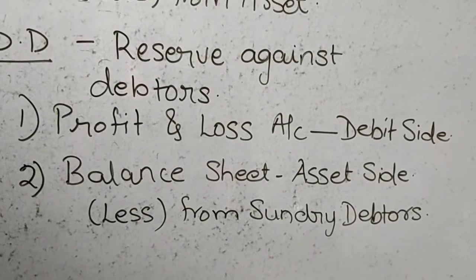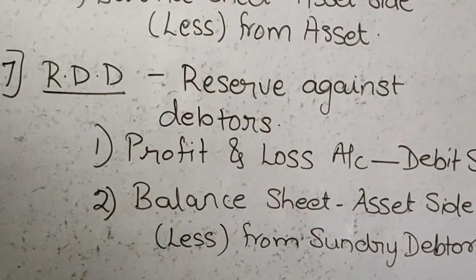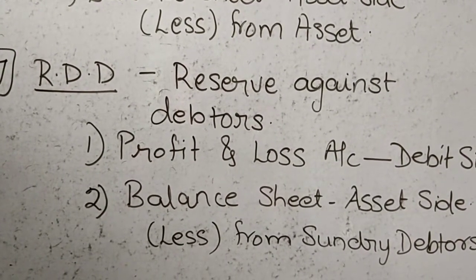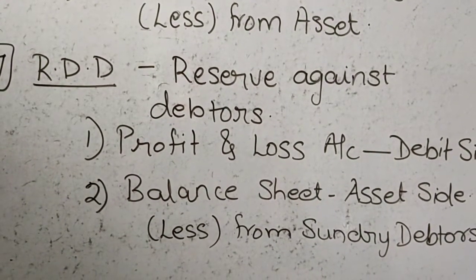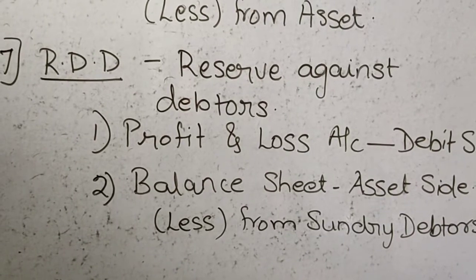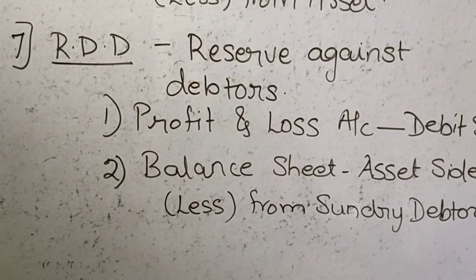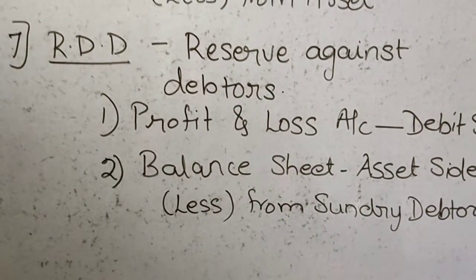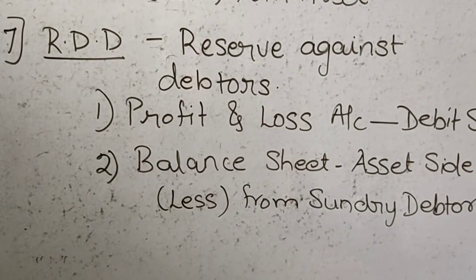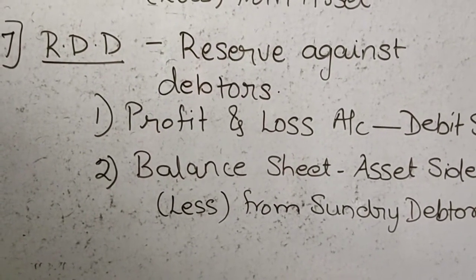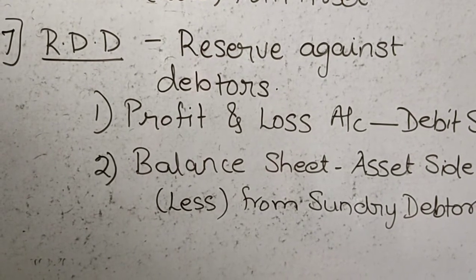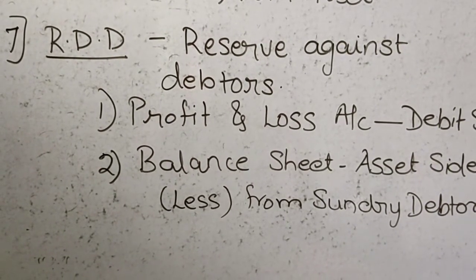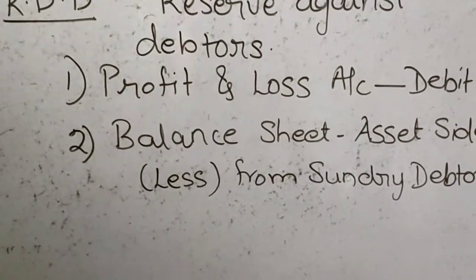These are the adjustments we had studied in our last year's final accounts. Out of these, closing stock, depreciation, RDD, outstanding expenses, and prepaid expenses are very important and are likely to be asked in your 12th standard also. The remaining adjustments like interest on capital and interest on drawings we will see in our next video. Till then, thank you all. Keep watching the videos.